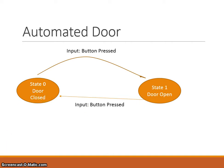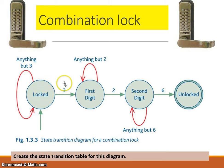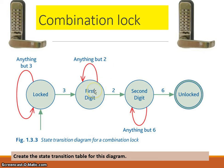Many of you might have locked your bikes using a combination lock, or there may be a combination lock on a door. If we think of a combination lock — the combination being 3, 2, 6 — we might start in a locked state. If we enter anything other than 3, it stays locked. If we enter 3 first, we get into the first digit correct state. Anything other than 2 next, we remain in that state, or it may take us back to the locked state.